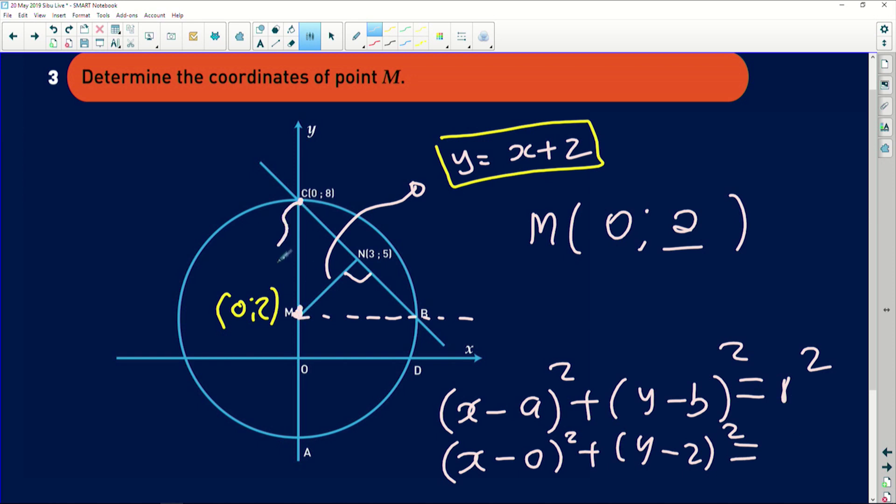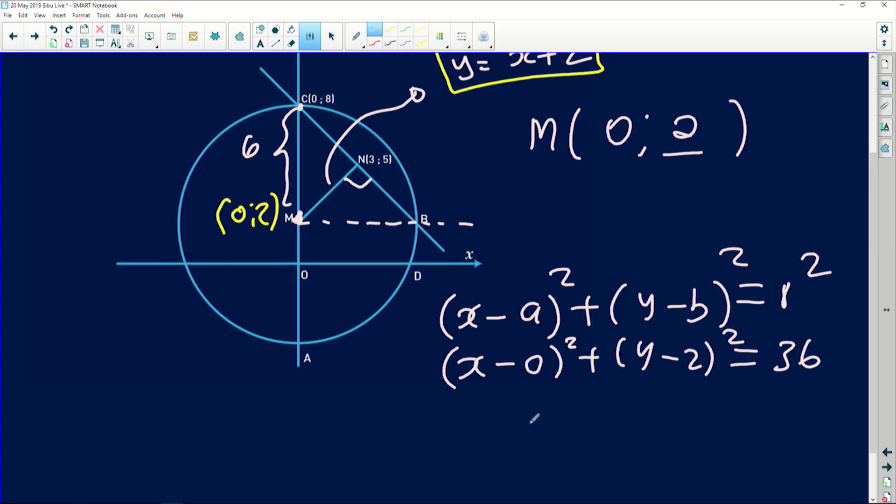The radius is the distance from 2 to 8. You can see that from 2 to 8 you're just moving 6 units, so 6 squared will simply give you 36. If you clean this up, x minus 0 is x², plus (y-2)² equals 36. It's a very nice question indeed.